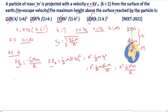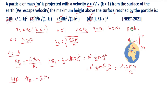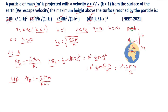Now let us go to point B. At B, the potential energy is PEB equal to minus G capital M small m by (R + H), where R + H is the distance from the center of the earth to that point. At B, the kinetic energy KEB will be equal to 0, since it reaches its maximum height.